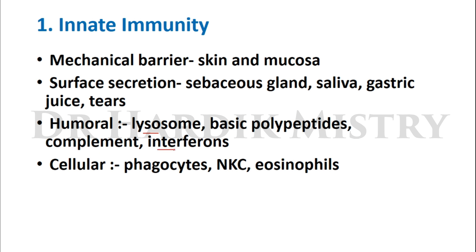Cellular innate immunity includes phagocytes — the cells which perform phagocytosis — natural killer cells, and eosinophils. All of these take part in the innate type of immunity.